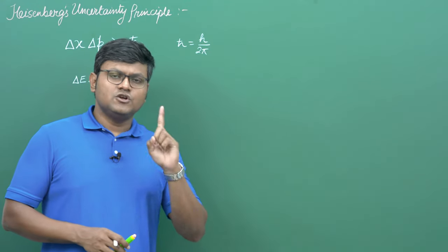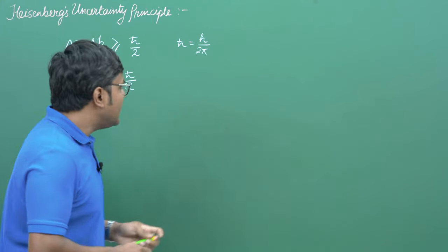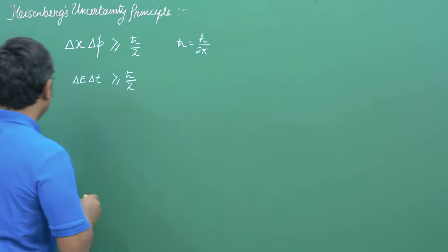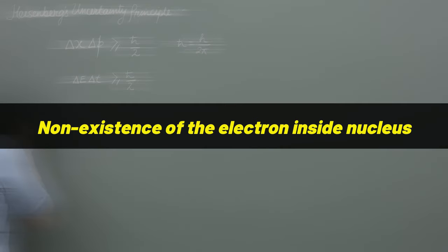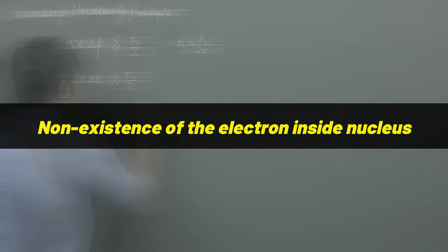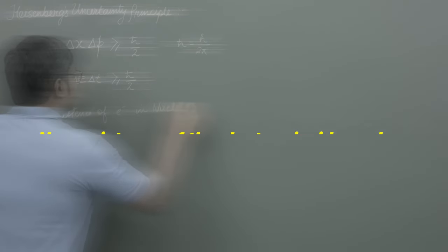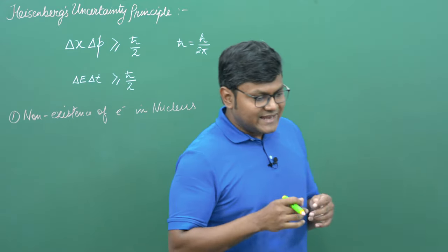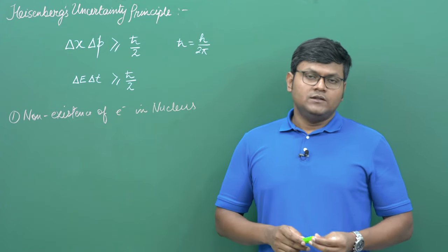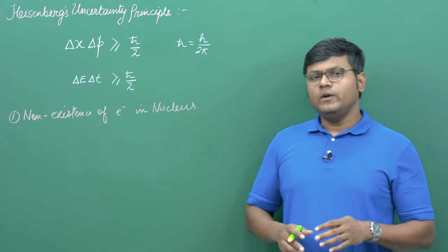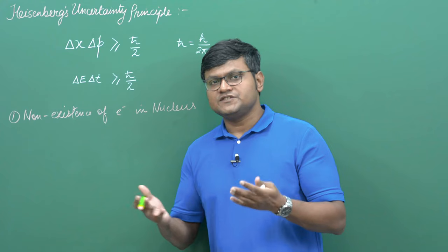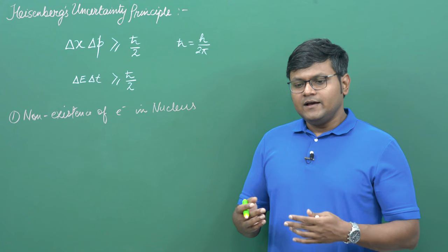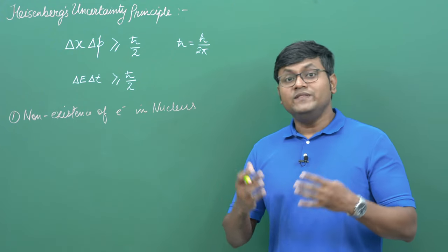The very first consequence has to do with the non-existence of an electron inside a nucleus. In the atomic structure, we have a nucleus and an electron going around it. Almost 100 years ago, when we were still figuring out the nature of the atomic structure, there were ideas floating around — one idea was that electrons can survive within the nucleus.